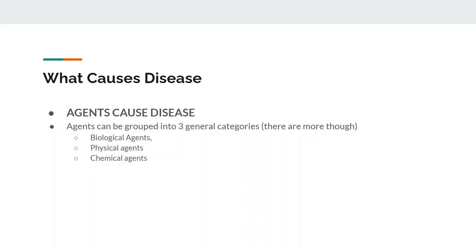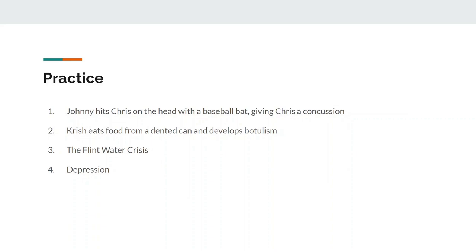So what causes disease? Agents cause disease. An agent is defined as anything that causes disease in an epidemiological sense. Agents can be grouped into three general categories: biological agents, physical agents, and chemical agents. There are some more niche categories and divisions within these, but these three broad categories encompass most agents. We'll talk mostly about biological agents, as those cause most infectious diseases — the ones epidemiologists would look into most.